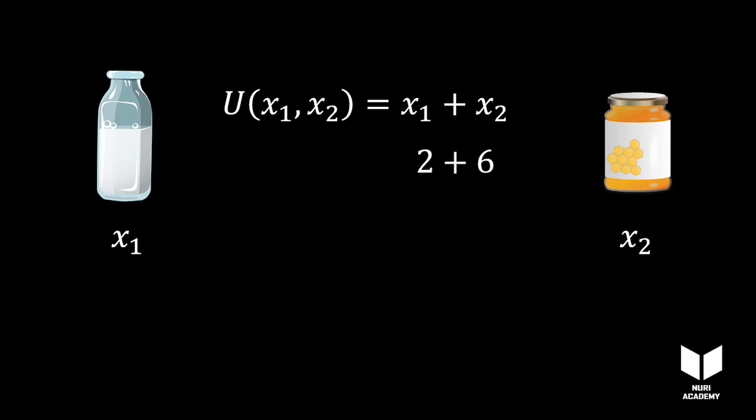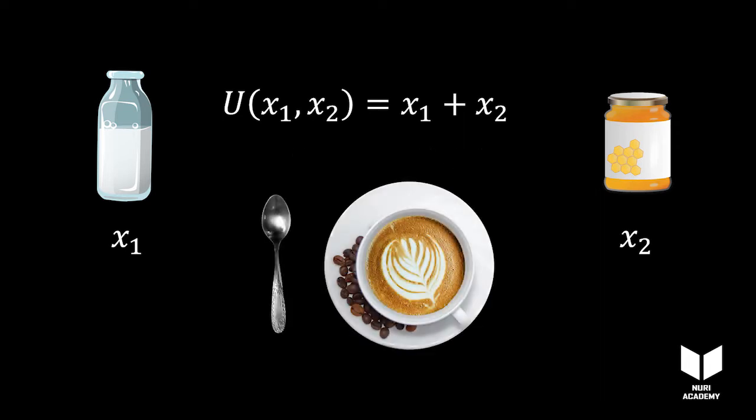Two ounces of milk and six ounces of honey would give you the same level of satisfaction as three ounces of milk and five ounces of honey, or four ounces of milk and four ounces of honey, or five ounces of milk and three ounces of honey. All you care about is the sum of the two.